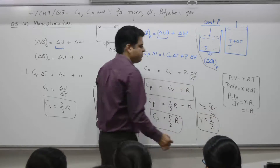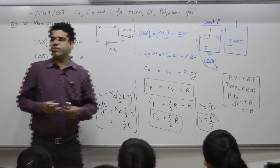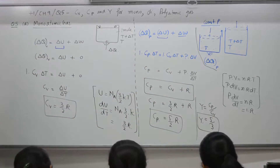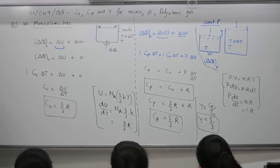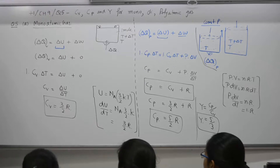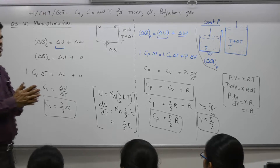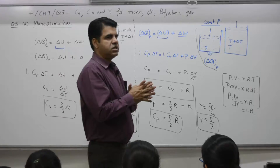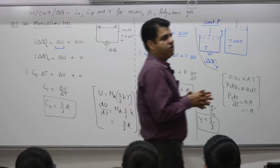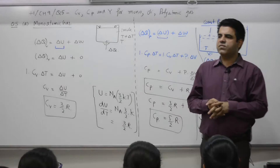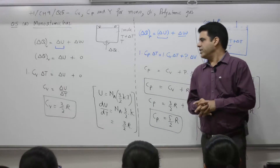For monoatomic gas, Cv was 3/2 R, so Cp equals 3/2 R plus R equals 5/2 R. Gamma equals Cp by Cv equals (5/2 R) divided by (3/2 R) equals 5/3. Conclusion: for monoatomic gas, Cv equals 3/2 R, Cp equals 5/2 R, and gamma equals 5/3.